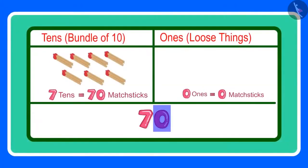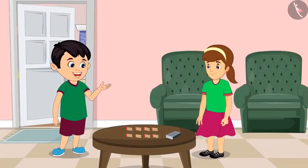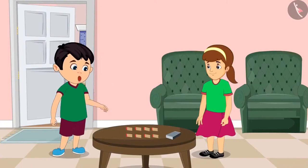70 has 7 tens and 0 ones. 0 ones? What does 0 ones mean? 0 ones means there is not even a single loose matchstick. For 70 matchsticks, you will need to make 7 bundles of 10 matchsticks each. Okay, now I have understood. Thank you, Arti.